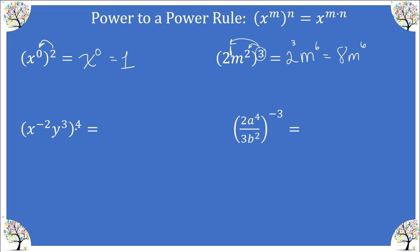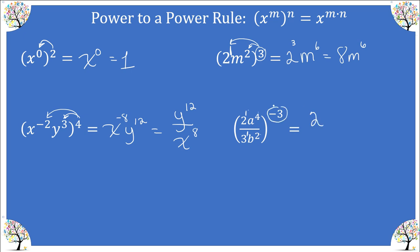On the next example we have two factors raised to the power of four. This power of four is multiplied by every exponent inside the parenthesis, giving us x to the negative eight and y raised to the power of twelve. Applying the negative rule gives us y to the twelfth over x to the positive eighth. For our last example together, we have four different factors. Including all understood ones, we multiply negative three times each exponent: two to the negative three, a to the negative twelve, three to the negative three, and b to the negative six.